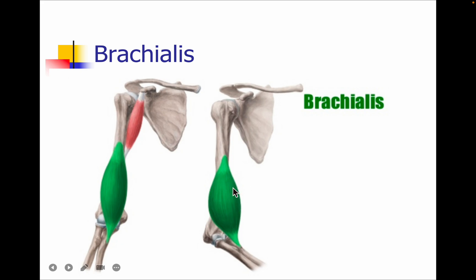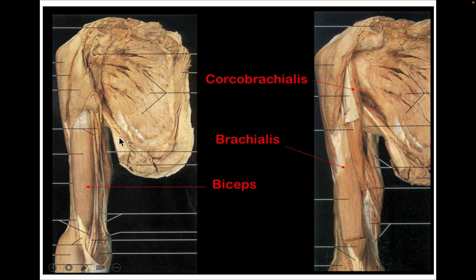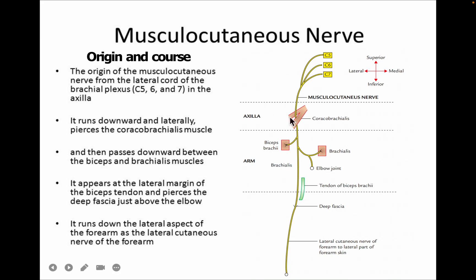In the dissection of the biceps brachii, deep to the biceps brachii we can see the brachialis muscle, and on the medial aspect we have the coracobrachialis muscle. Keep in mind: all three muscles — biceps brachii, brachialis, and coracobrachialis — are supplied by the musculocutaneous nerve, with the exception of brachialis, which is also supplied by the radial nerve.